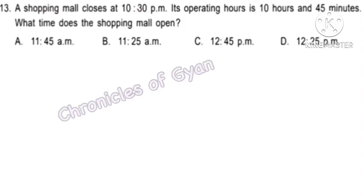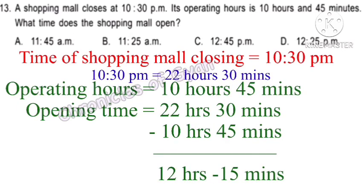Question 13. A shopping mall closes at 10:30 pm. Its operating hours is 10 hours and 45 minutes. What time does the mall open? Closing time is 22 hours 30 minutes. Subtracting 10 hours 45 minutes: since 30 minutes is less than 45 minutes, we get 22 hours minus 10 hours equals 12 hours, then subtract 15 minutes to get 11 hours 45 minutes. Hence option A — 11:45 am.